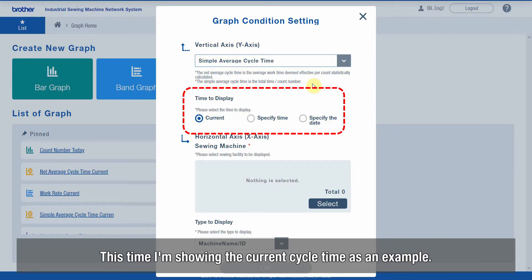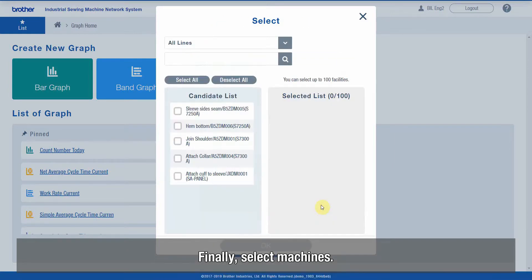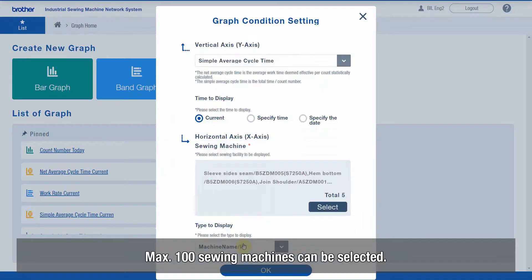This time I'm showing the current cycle time as an example. Finally, select Machines. Max 100 sewing machines can be selected.